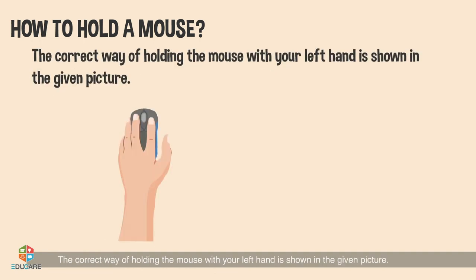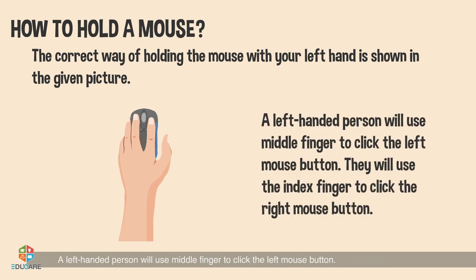The correct way of holding the mouse with your left hand is shown in the given picture. A left-handed person will use the middle finger to click the left mouse button and the index finger to click the right mouse button.